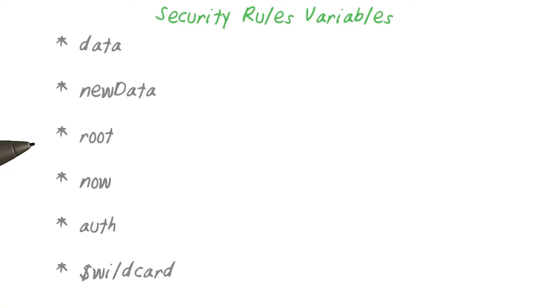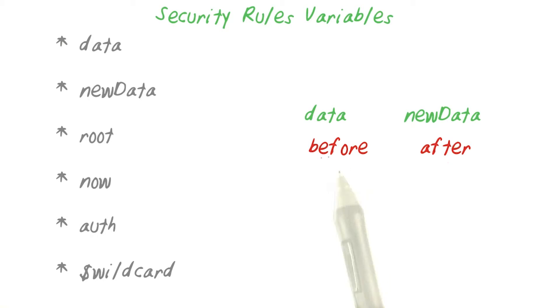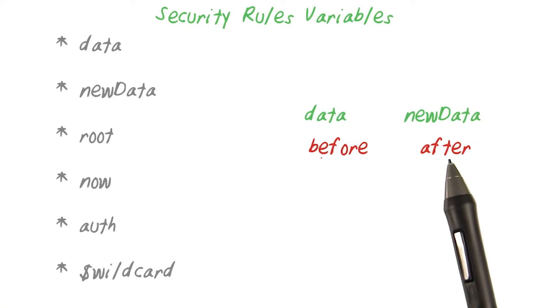As you know, Firebase provides helpful variables that you can use in your rules. You've already learned about two of these: data and newData, which are essentially variables that you can use in your JSON rules for the previous state of the data and the new state of the data.